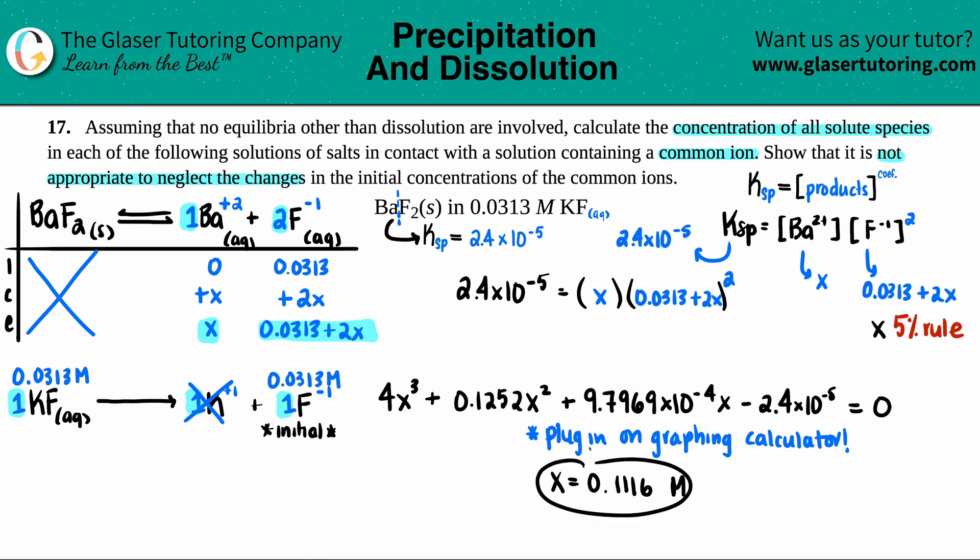Now, all we have to do is just plug this x value into these numbers. So, seems like we have a Ba2+ concentration, which was just x. So, that would be 0.1116 molarity. And then for our F minus, it was 0.0313 plus 2x. So, we have to plug in that x value into the equation. 0.0313 plus 2 times 0.1116. And I get roughly 0.2545. That's molarity. And these are your two concentrations of your solutes.